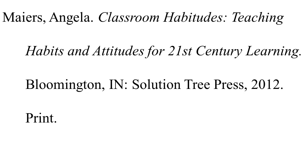For citing books in MLA, you need to know the author and list them last name, comma, first name, middle name or middle initial if available, and then a period. If no middle name or initial is available, place the period after the author's first name.